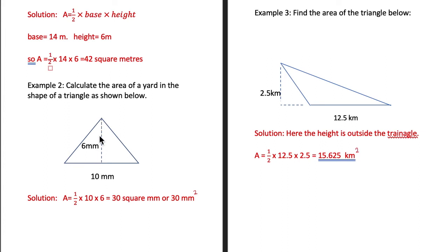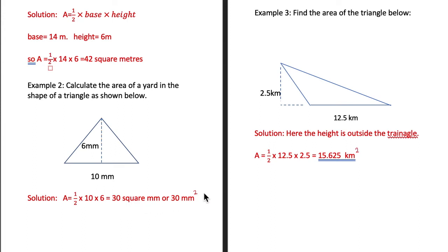The height is a line that you draw perpendicular from any given corner to the opposite side, and that opposite side is going to be your base. So here this is our base and this is our height. Area is equal to half times base, which is 10, times the height, which is 6. That comes to 30 square millimeters.